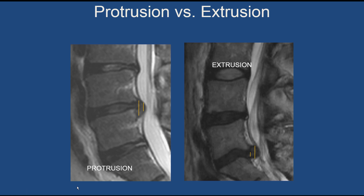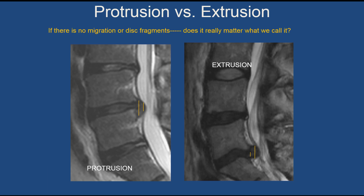Protrusion versus extrusion: a protrusion is where the most posterior portion of the disc is narrower than its origin. An extruded disc is the opposite — the origin of the herniation is smaller than the posterior extent. Protruded discs are more likely to regress with time, whereas extruded discs have less ability to become less voluminous. However, whether a disc is protruded or extruded is not that important in dictation — if there's no migrated disc or disc fragments, it probably doesn't matter what you call it.